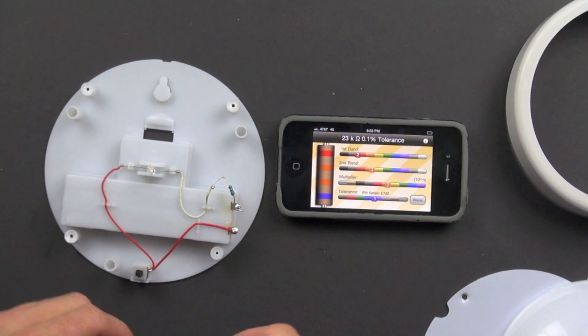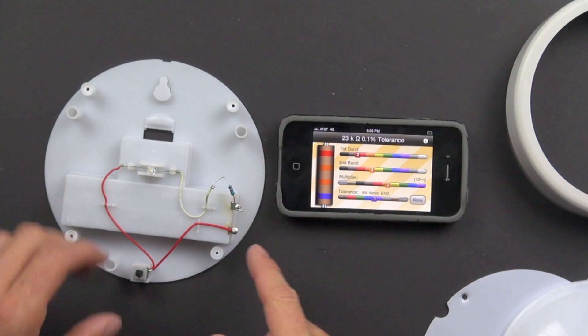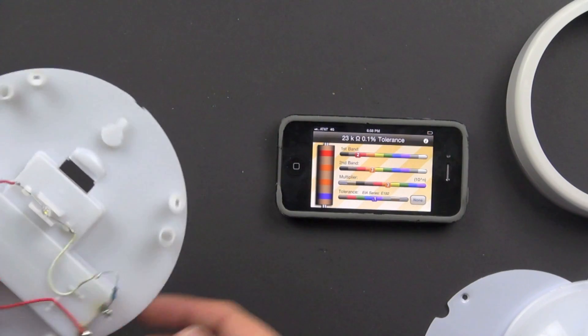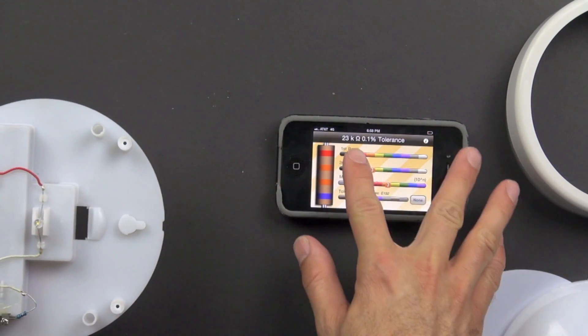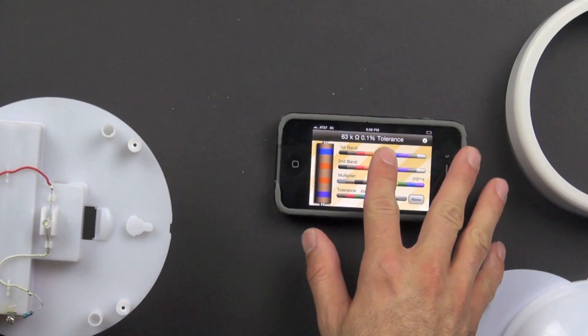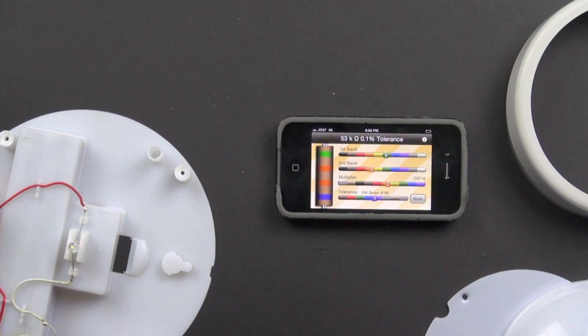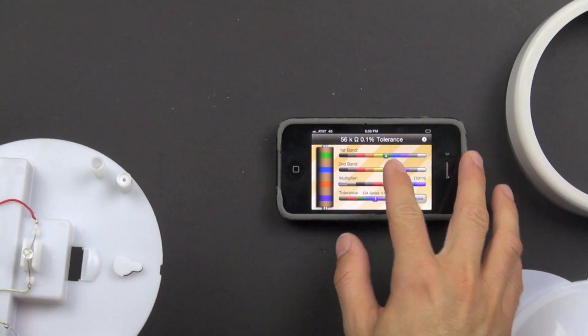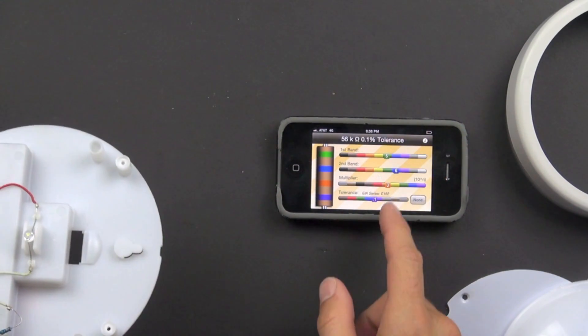It used to be, you'd have to look it up or just memorize what the different color band codes meant. But this particular resistor has got a green band. So we'll put it on green. There we go. And it's got looks like a navy blue band and a gold band.